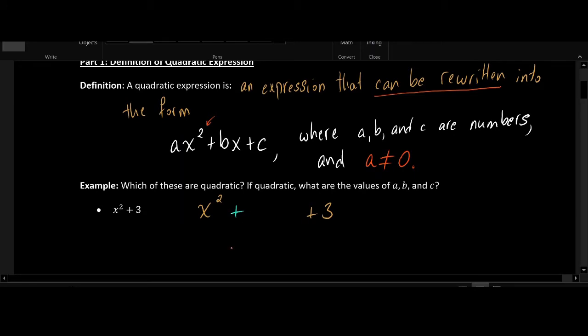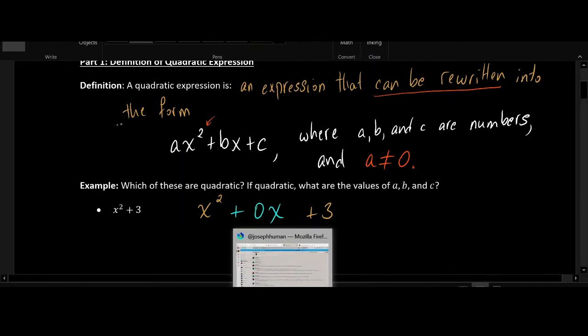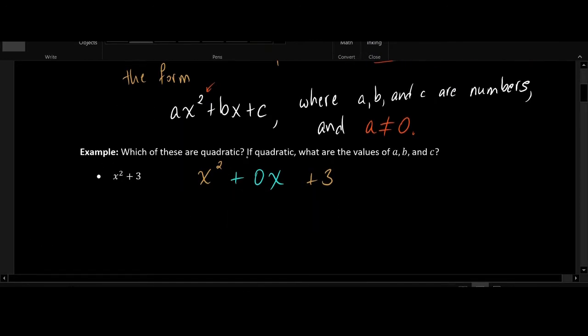Adding zero to an expression doesn't change anything, and adding zero x's to an expression doesn't change anything either. So this what I've written on the right-hand side is a valid rewrite of x² + 3. But now it's in the correct format: number times x squared plus number times x plus three. It may also help to acknowledge that x squared by itself is the same thing as one times x squared.